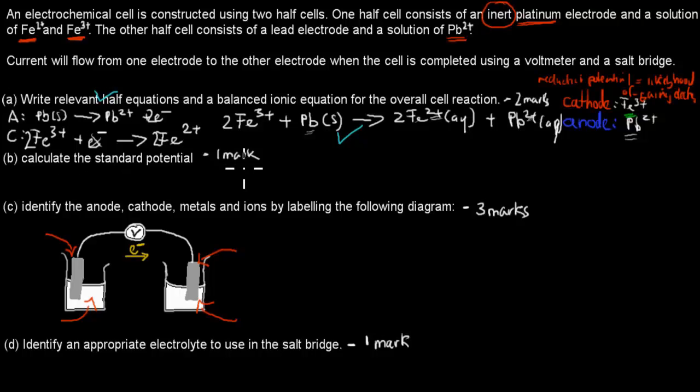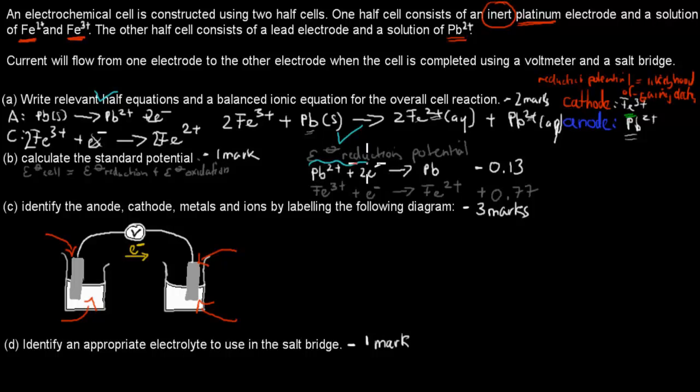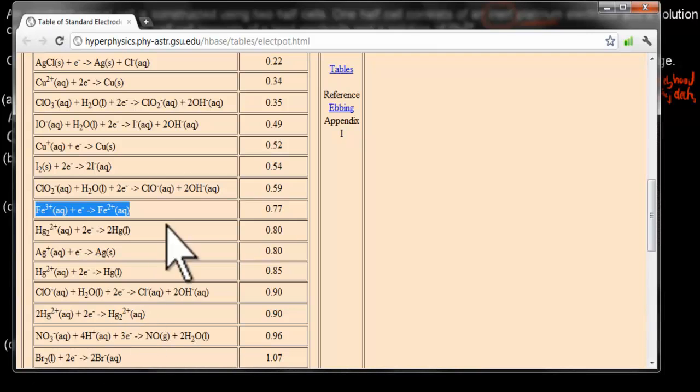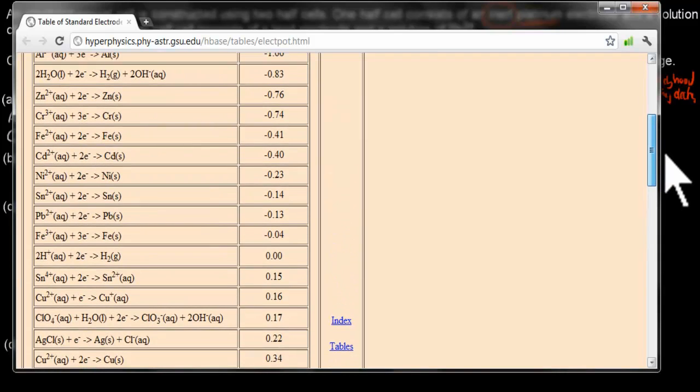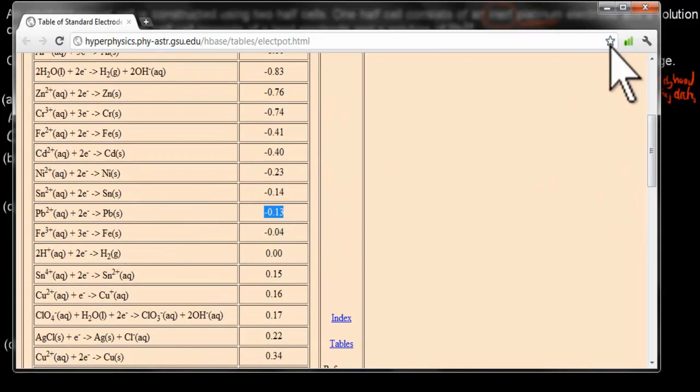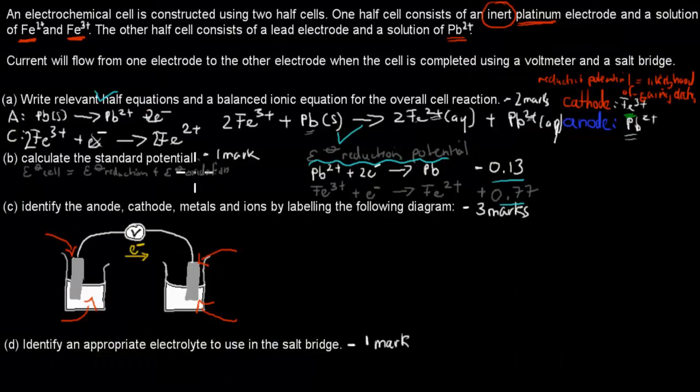Next was to calculate the standard potential. So for that part, like the other ones, we have to use this reduction potential table. And I've written these ones already down beforehand, but I'll show you where I got them from. So this is how likely they are to be reduced. For our Fe, this was here, 0.77 positive. And for the other one, for lead, it was -0.13. Now this is the way we calculate standard potential. So for the one that's being reduced, which in this case is our cathode, the one that our cathode has been reduced to Fe, all we can do is we can just grab that value straight off here and use that. So 0.77. Don't have to change it.